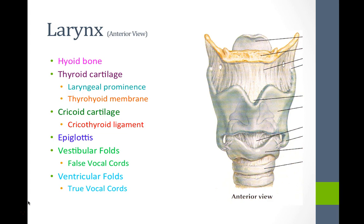We'll start off with the larynx, and this is an anterior view. If you take your hand and slide it right below your chin straight back until you hit your neck area, that is where you will feel your hyoid bone, which is this horseshoe-shaped bone right here. This bone is one of the only bones not connected to another bone — there are no articulations with any other bones — so it is freely floating with attachments to 22 different muscles and ligaments.